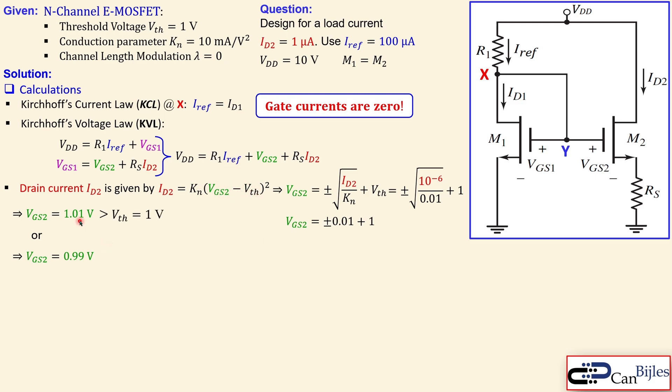Now this one is larger than the threshold, which is one. That means this is valid, but this one is smaller than the one volt, so this is invalid. So our only solution is 1.01 volts for the VGS2.